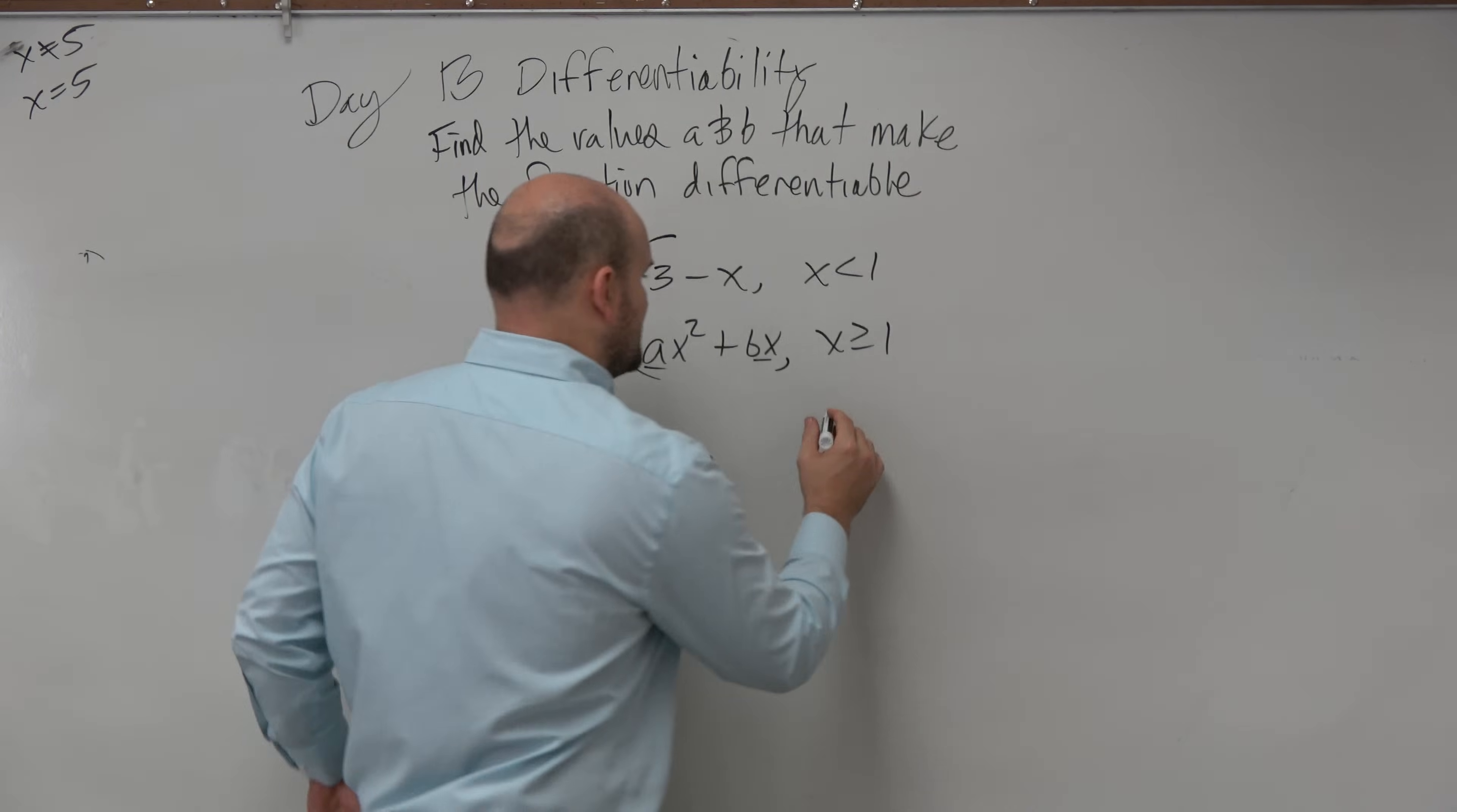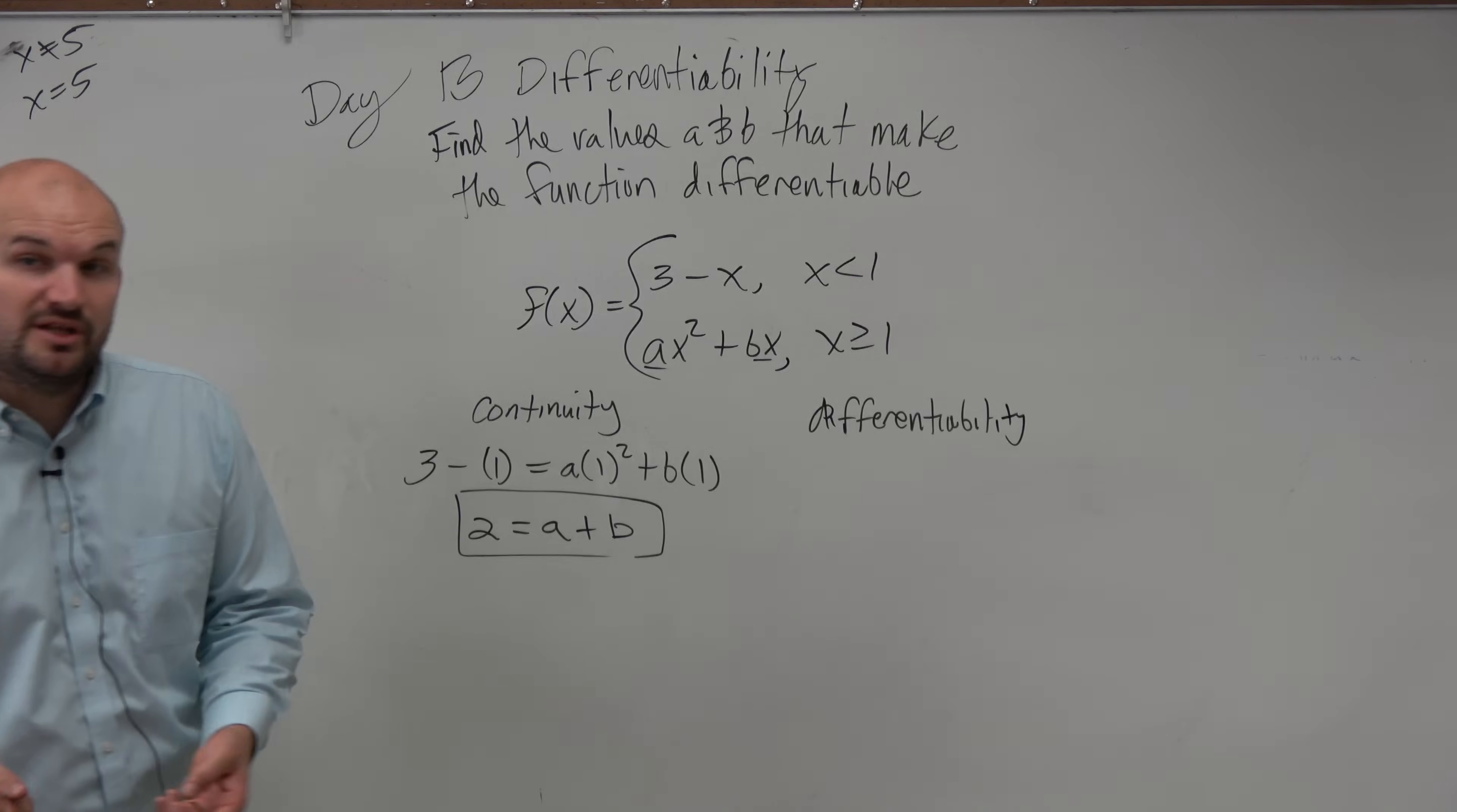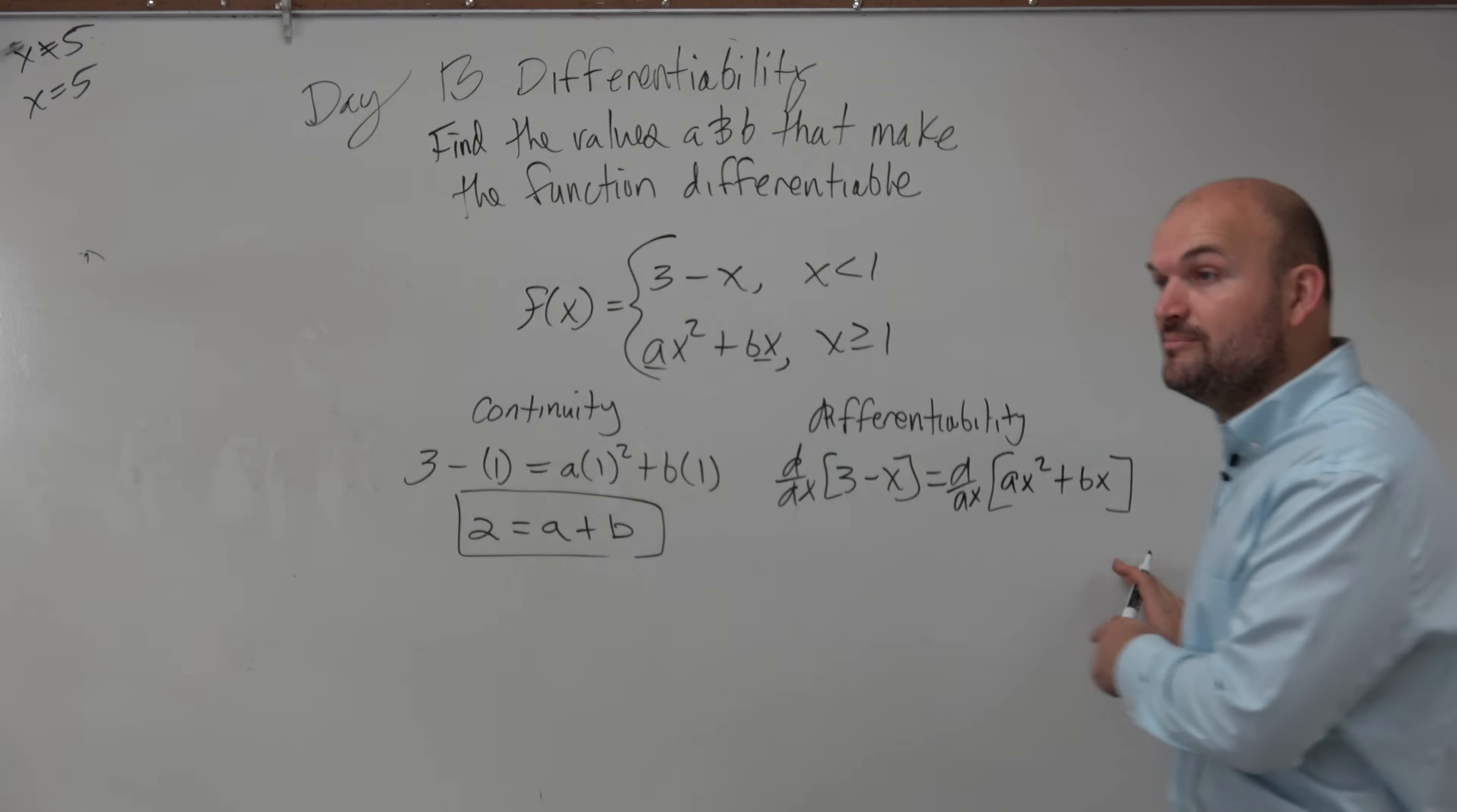The next thing we want to do is check differentiability. So, to check differentiability, what we want to do is take the derivative, d over dx of 3 minus x, and have that equal to d over dx of ax squared plus bx.